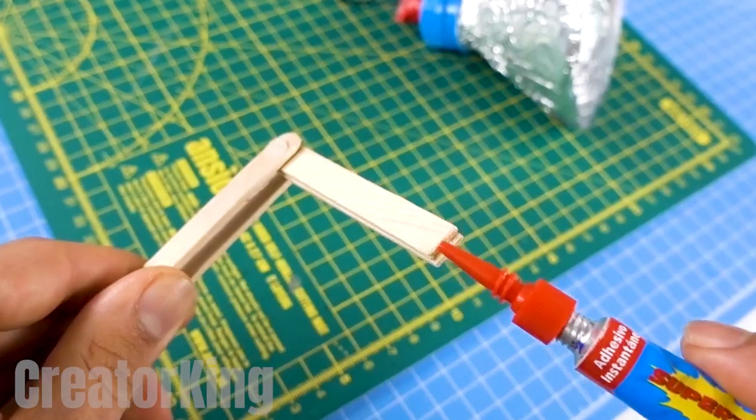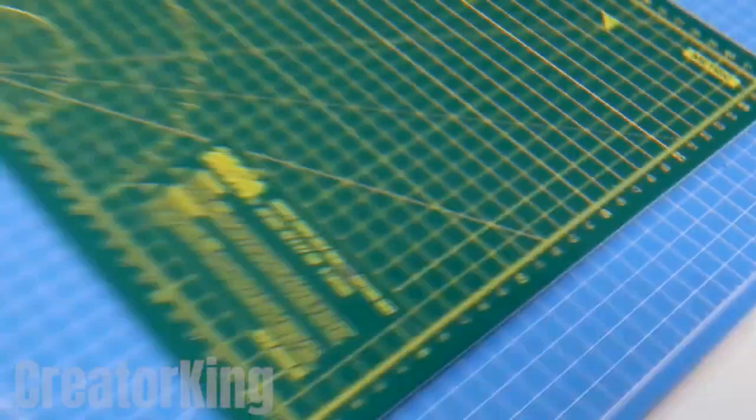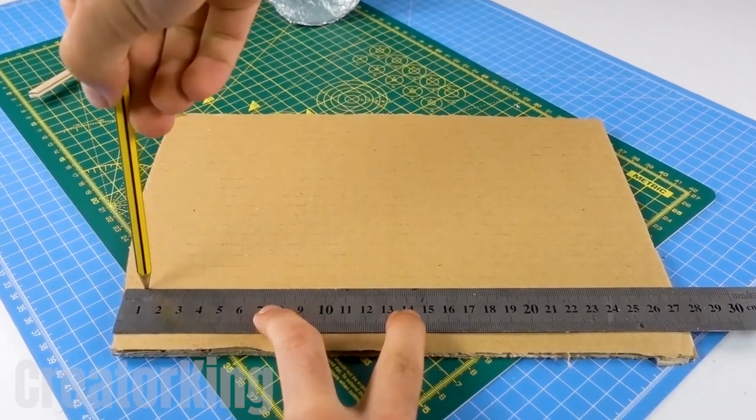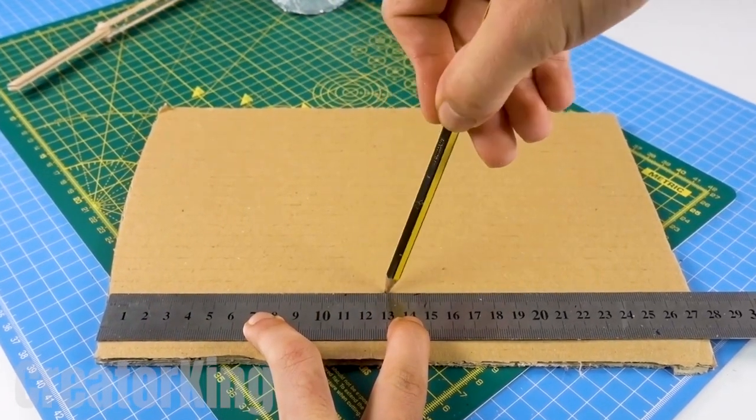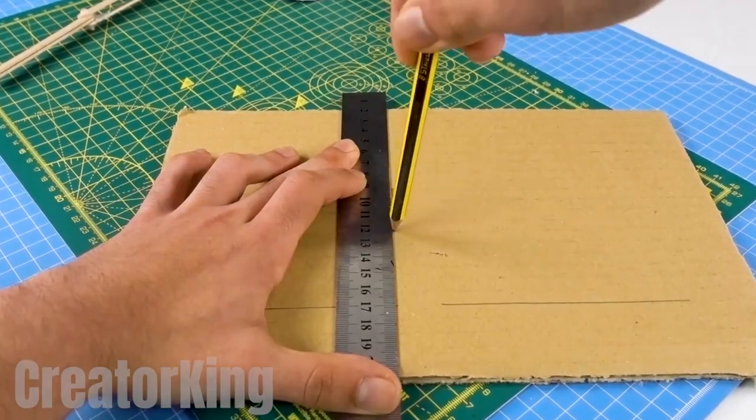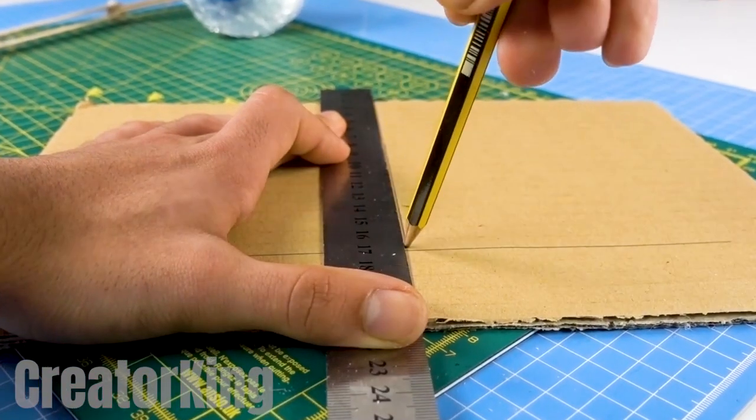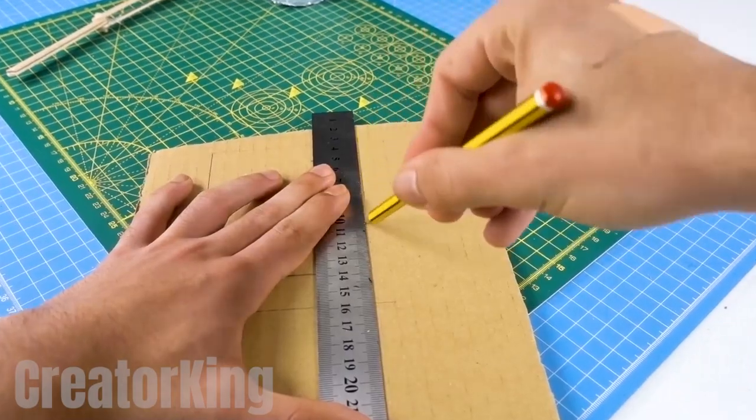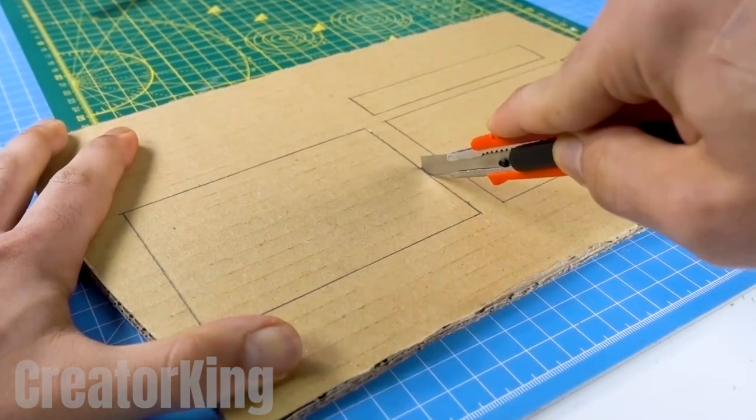Put glue on the end of the wooden arm and attach it to the reflector head. We still have to put together the base to keep it standing and the electrical circuit, but let's take it one step at a time. Start marking the pieces we'll need on a piece of cardboard and cut them out with the help of a box cutter.